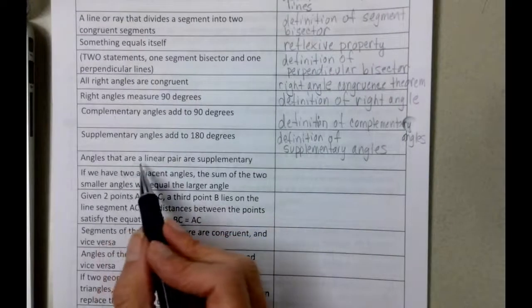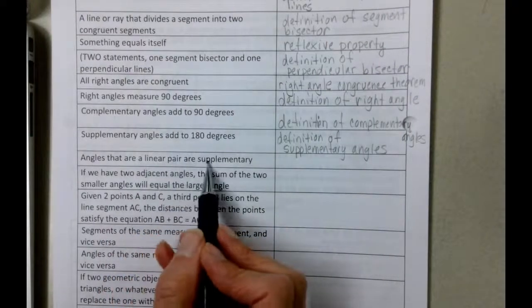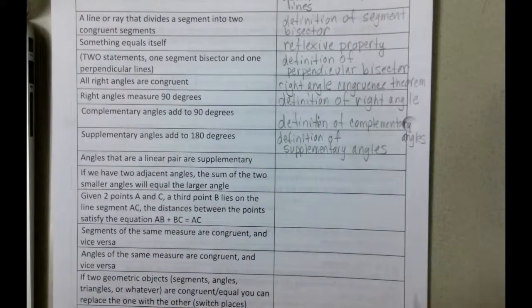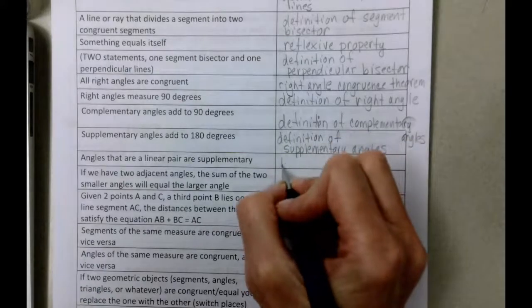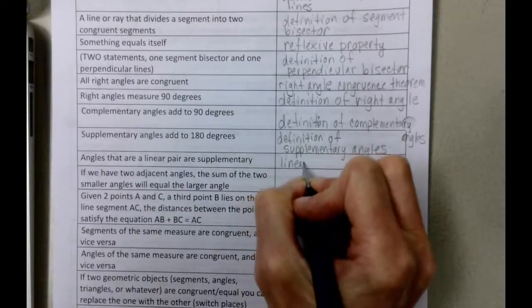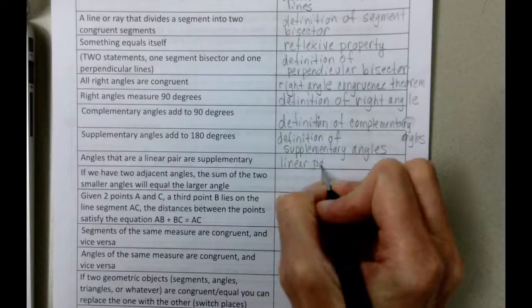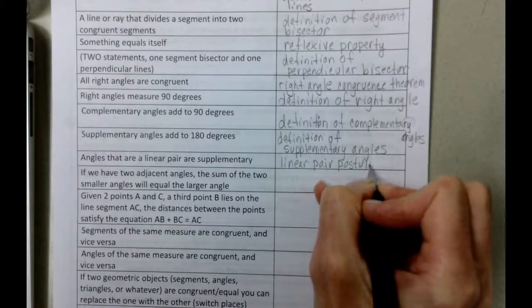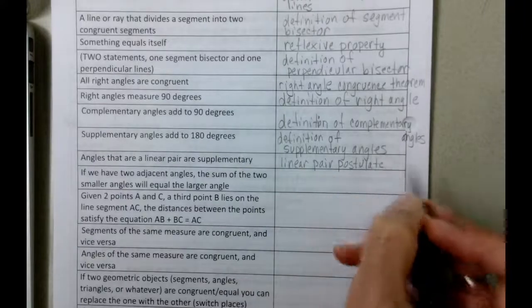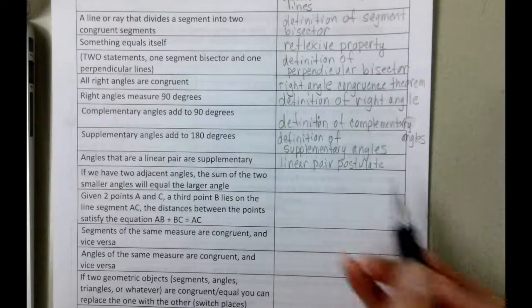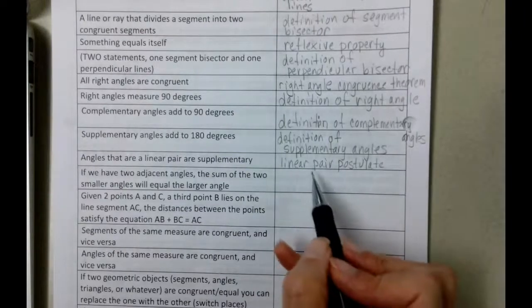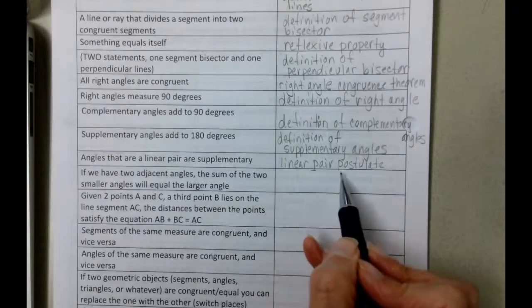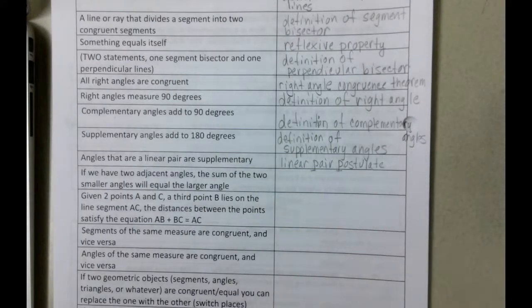Angles that are linear pair are supplementary, well linear pair postulate is the reason. Your geometry teacher might use theorem on that. I don't know, I like the linear pair starts with P and postulate starts with P, so hopefully I'm not wrong on that.